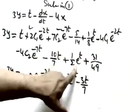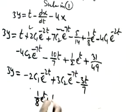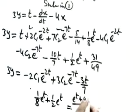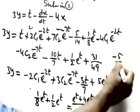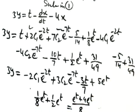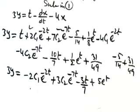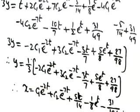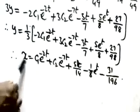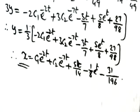After combining all terms and dividing by 3, we get the value of y. Taking the LCM for the constant terms gives −5/14 + 31/49. Dividing through by 3 gives the complete solution for y. We now have both x and y. Since the question is lengthy, the next question will be done more briefly.